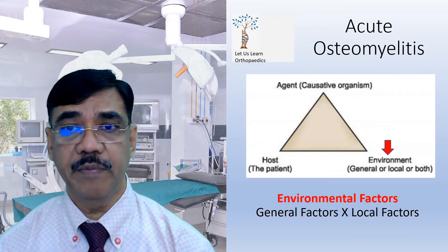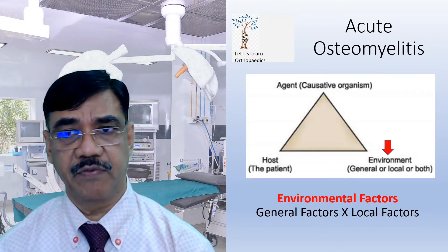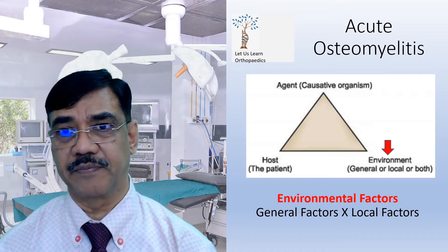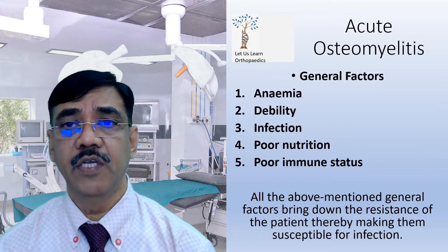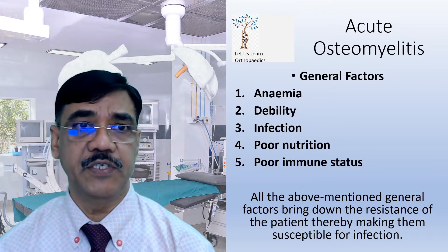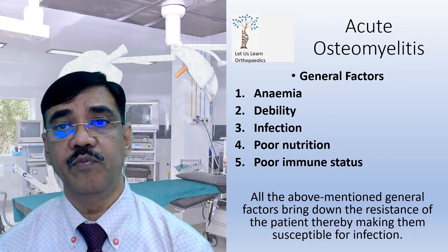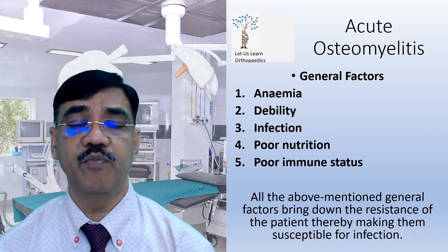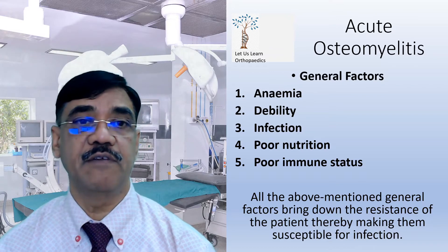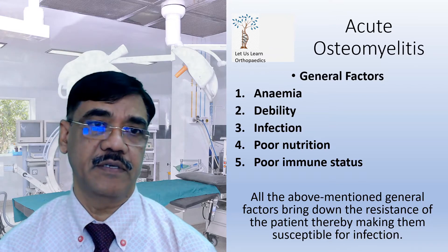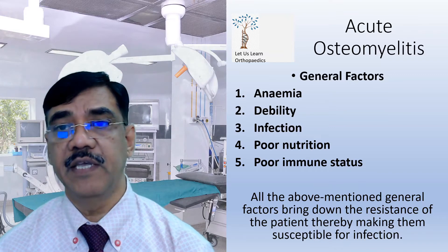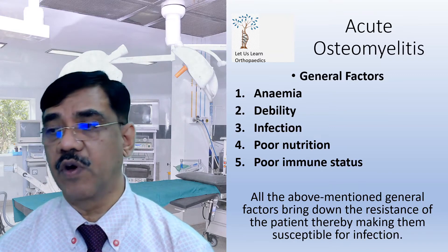Coming to the environmental factors, which can be divided into general factors and local factors. General factors include anemia, debility, infection, poor nutrition, and poor immune status. All the above-mentioned general factors bring down the resistance of the patient, thereby making them susceptible to infection.